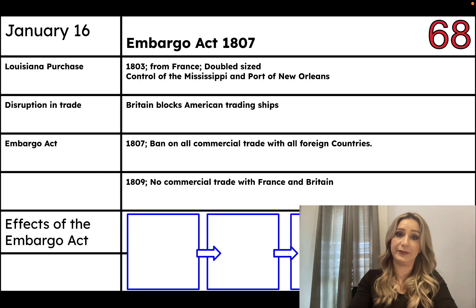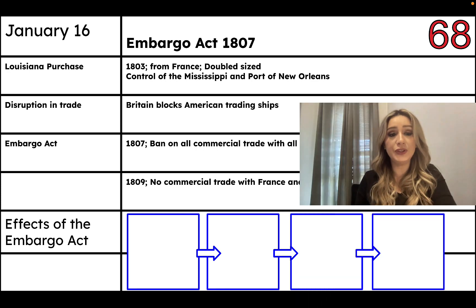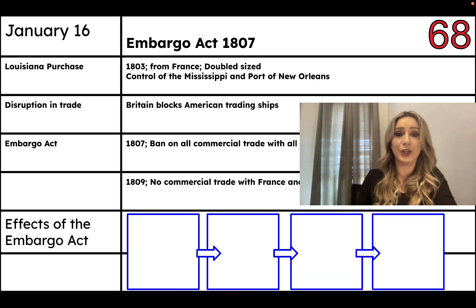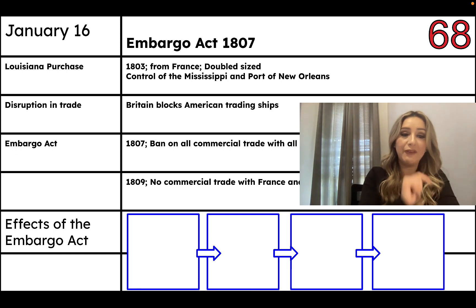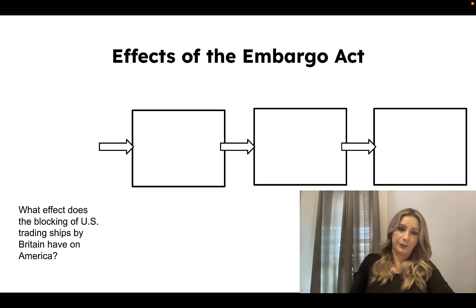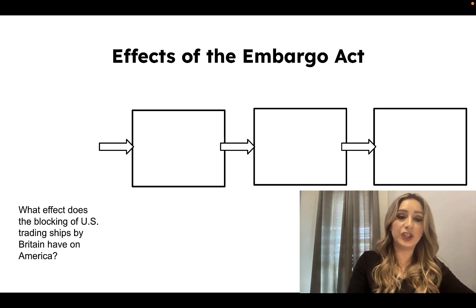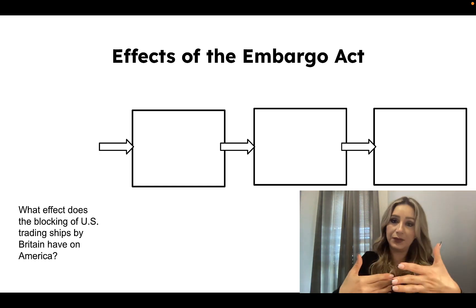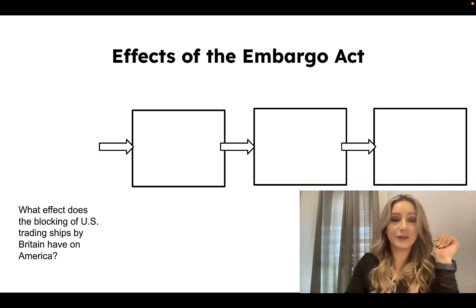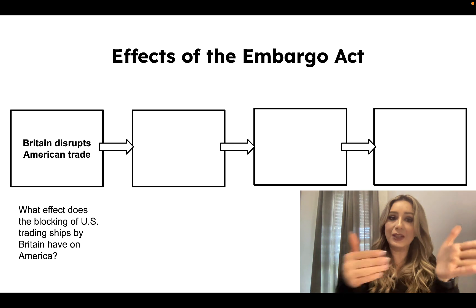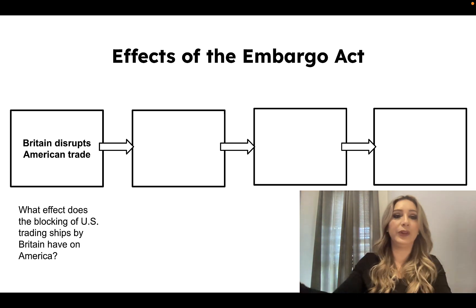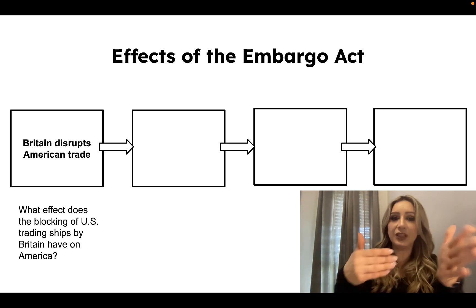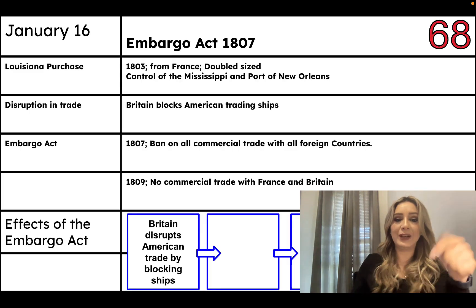There are both negative and positive effects of the Embargo Act. Draw this graphic organizer on your notes — make sure you put 'Effects of the Embargo Act.' What effect does the blocking of US trading ships by Britain have on America? Because Britain blocked us, Britain is disrupting our trade — we cannot trade with other countries. What does President Jefferson do in response to this disruption of trade? He gets upset and passes the Embargo Act, which was a ban.